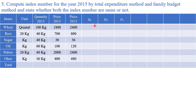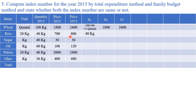For wheat, unit is quintal (100 kg) and quantity is 100 kg, so convert 100 kg to 1 quintal; prices stay as they are. For rice, unit is 20 kg: convert price 700 per 20 kg to 700/20 = 35 per kg, and 800/20 = 40 per kg; quantity stays as is. I will write down the converted table with these adjusted values.